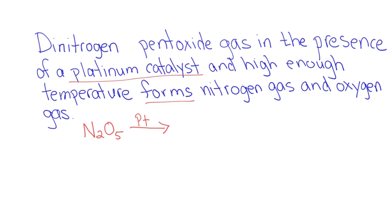And then we look at the word forms, and that's our arrow. It's going to form nitrogen gas. So the formula for nitrogen gas, I have to think about that. I have to ask, is nitrogen a diatomic element? And it is, and because of that, I put a 2 there. And then I'm also going to put a G there for gas.